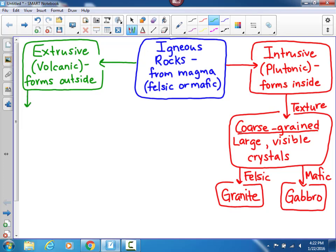First, the opposite of coarse-grained would be fine-grained. Fine-grained rocks have crystals, but they're only visible with a magnifying glass.